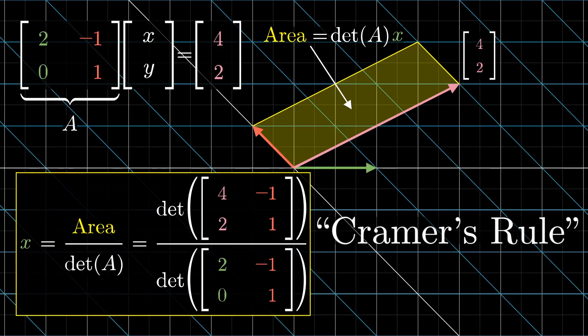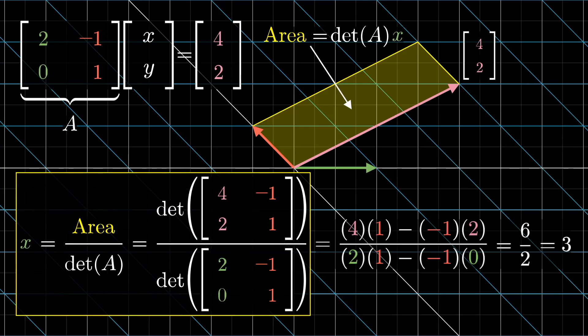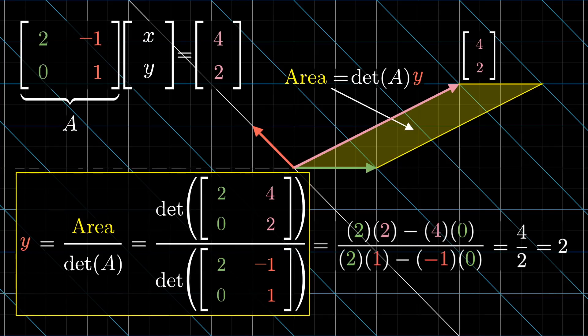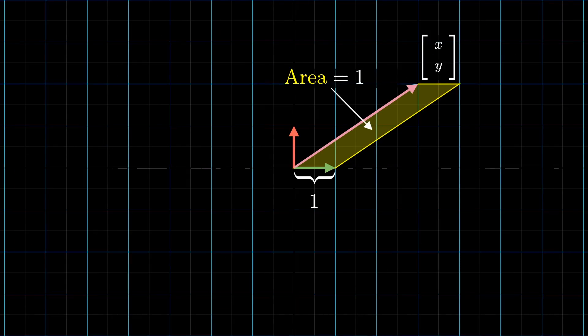Here, just to sanity check ourselves, plug in some numbers here. The determinant of that top altered matrix is 4 plus 2, which is 6, and the bottom determinant is 2, so the x-coordinate should be 3. And indeed, looking back at the input vector we started with, the x-coordinate is 3. Likewise, Cramer's rule suggests that the y-coordinate should be 4 divided by 2, or 2, and that is, in fact, the y-coordinate of the input vector that we were starting with.